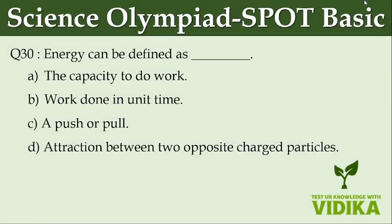Energy can be defined as dash. Option A, the capacity to do work. Option B, work done in unit time. Option C, push or pull. Option D, attraction between two opposite charged particles.